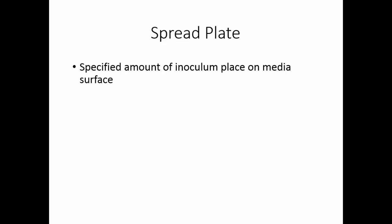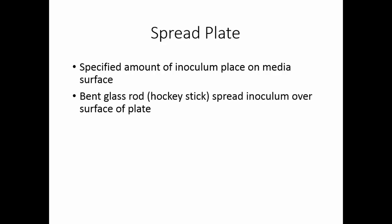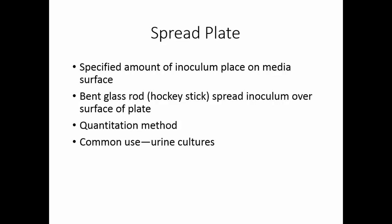The spread plate is also a way to quantify something. A specified amount of inoculum is placed on the media surface, and then a bent glass rod called a hockey stick is used to spread the inoculum uniformly over the surface of the plate. Because you inoculate a specific amount — say a hundredth or a thousandth of a milliliter — and spread that over the surface, you can count the colonies and multiply by however much you planted. This is commonly used in the clinical lab for urine cultures.